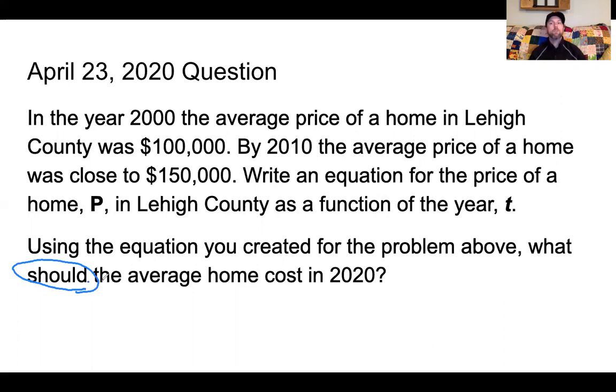So remember, you need to use the equation that you came up with last time, that P equals rate of change times T plus $100,000, and how much our price changed per year. So using that equation, I want you to solve for the average home cost in 2020.